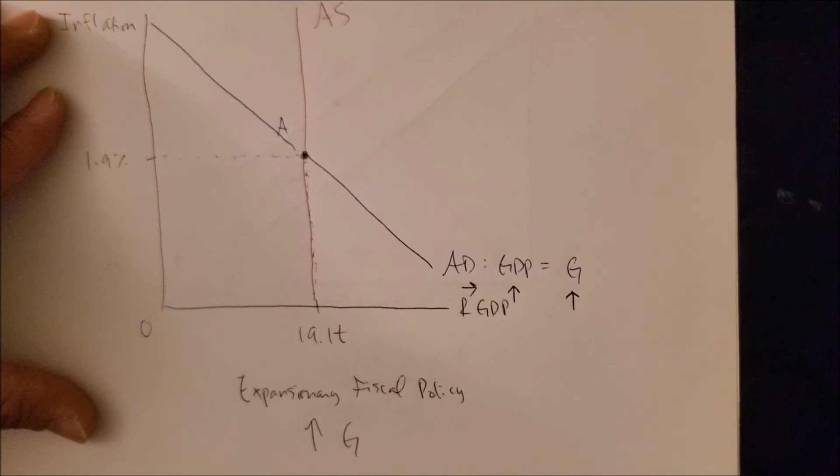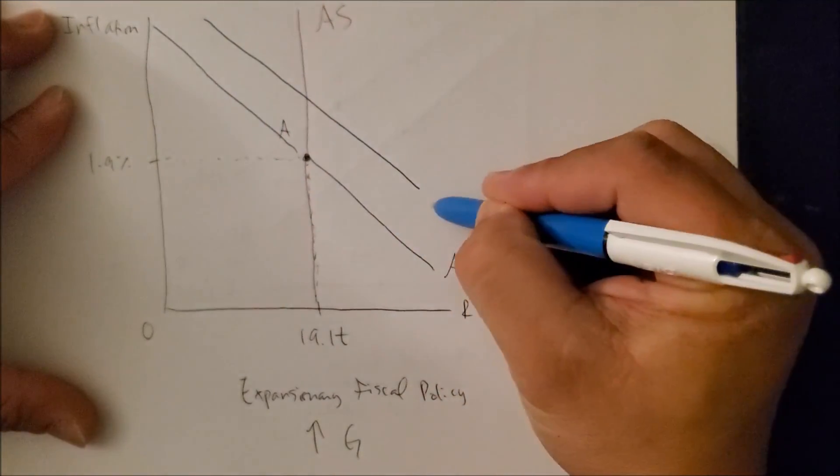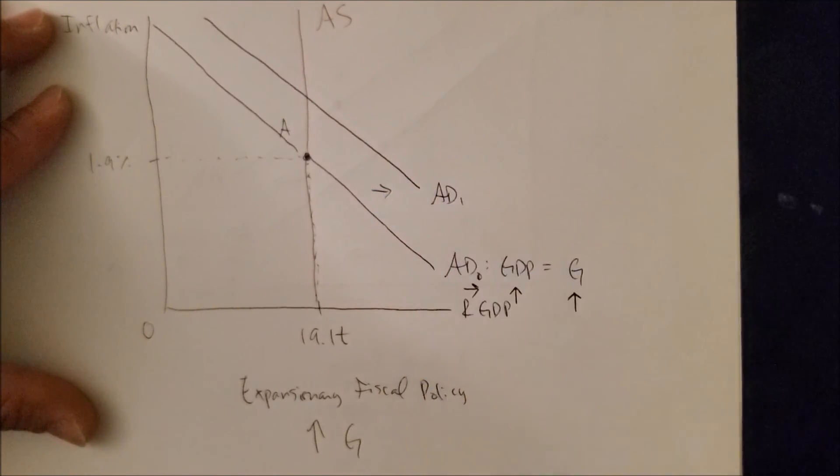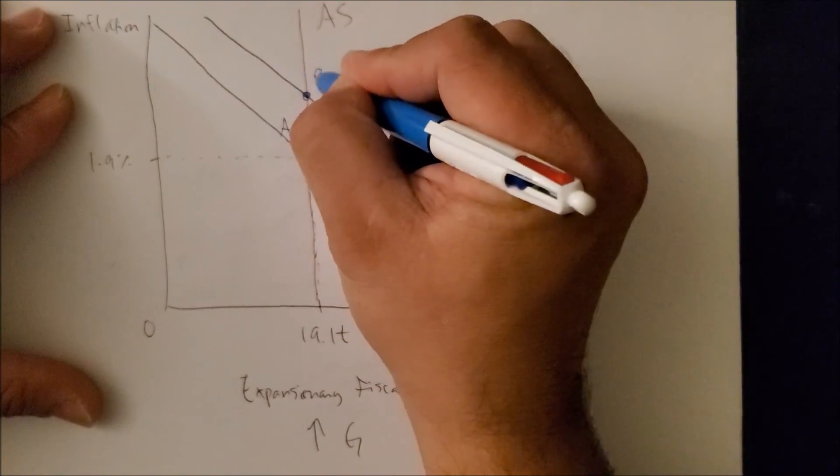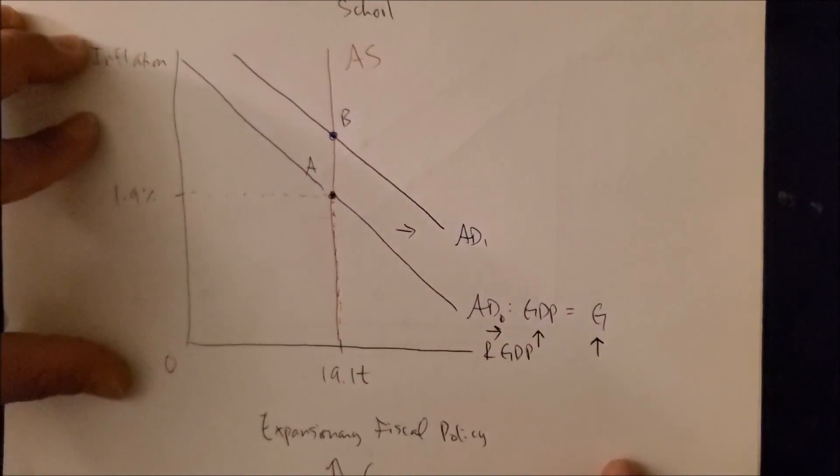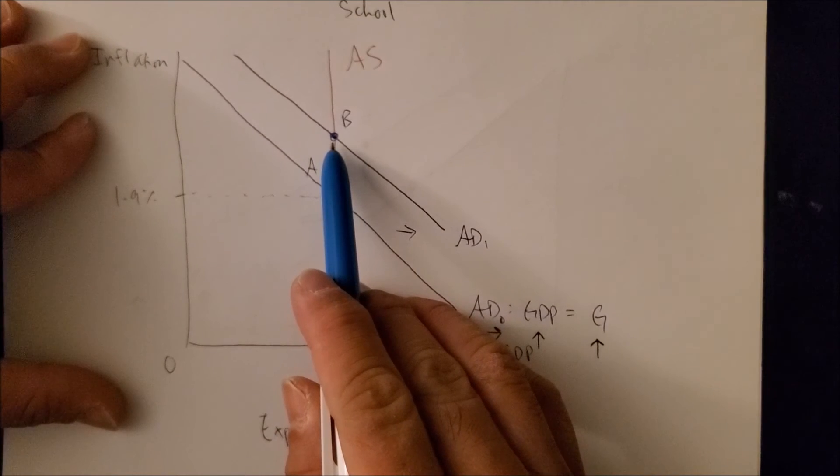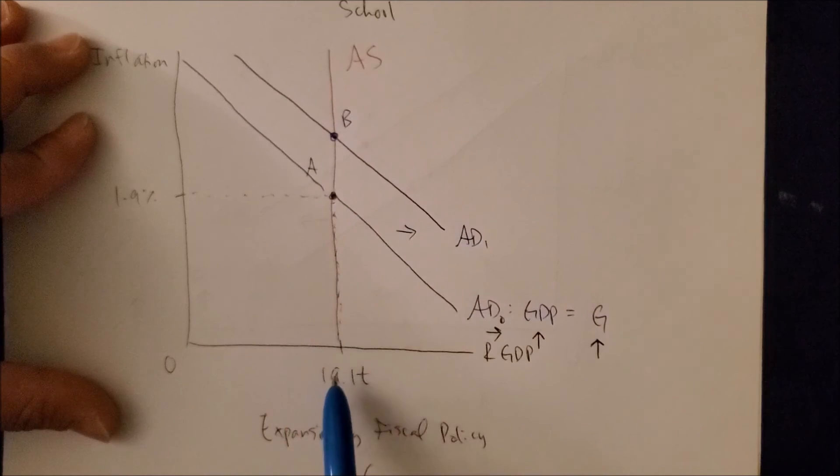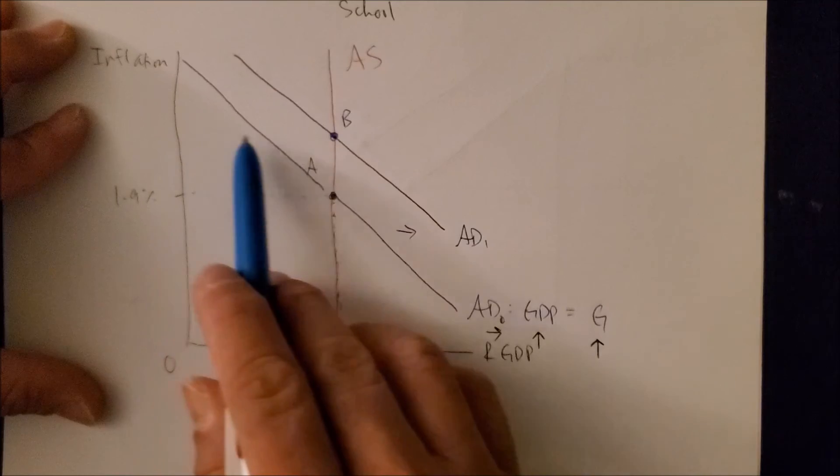But look at what happens when we shift AD to the right. Once we draw a new AD curve, AD1, we can show that shift to the right. Look at our new equilibrium point, point B. So the entire purpose of trying to grow the economy during times of crisis made it worse because there's no growth at all—it's still at 19.1 trillion dollars. But it made the economy worse off because now we have a higher level of inflation.